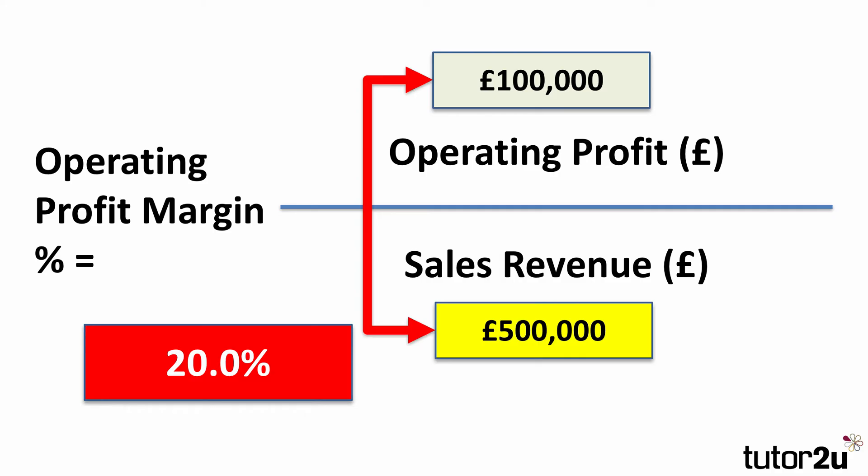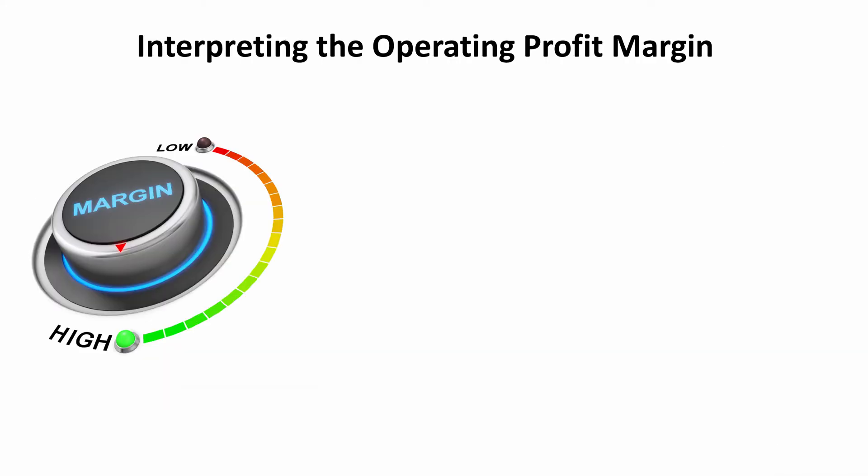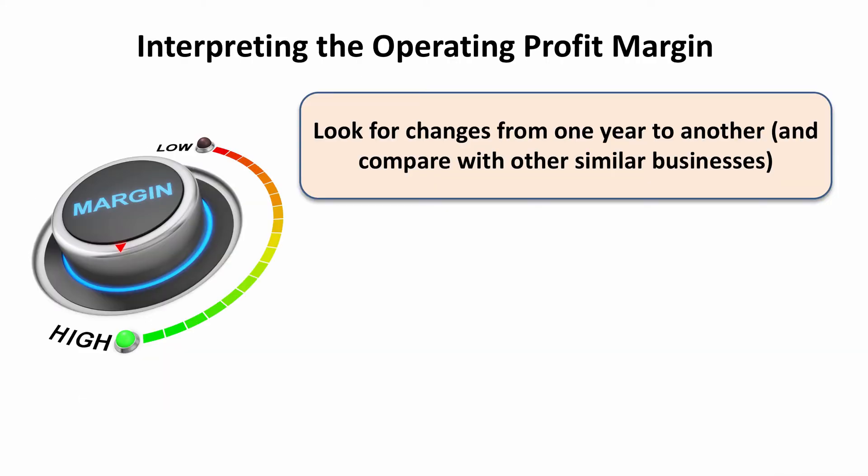On its own, the operating profit margin will tell you whether a business is profitable or not. But much more importantly is to look at changes from one year to another — is the operating margin rising or falling? And also very importantly, to compare with similar businesses, particularly competitors.